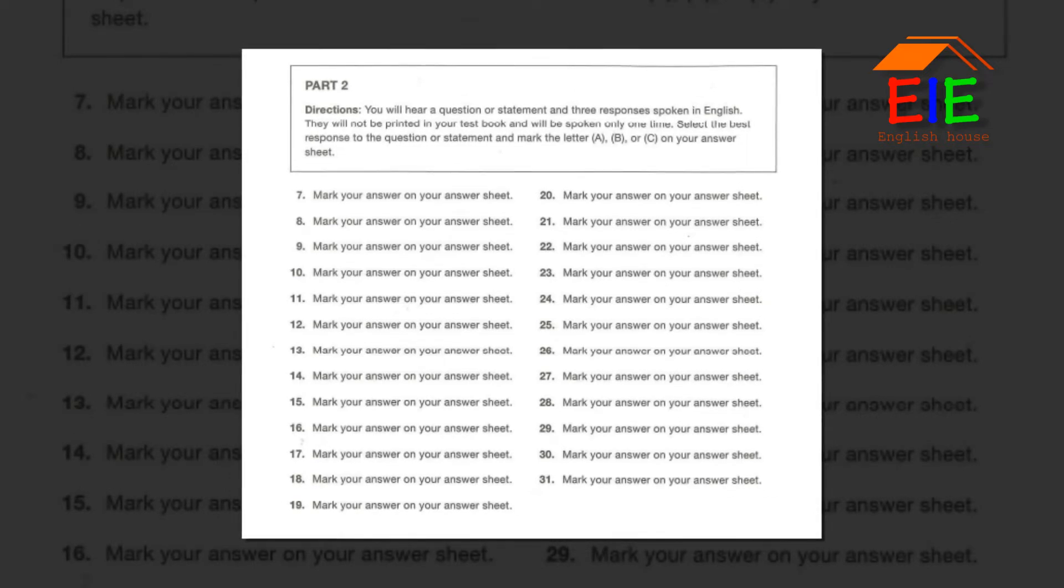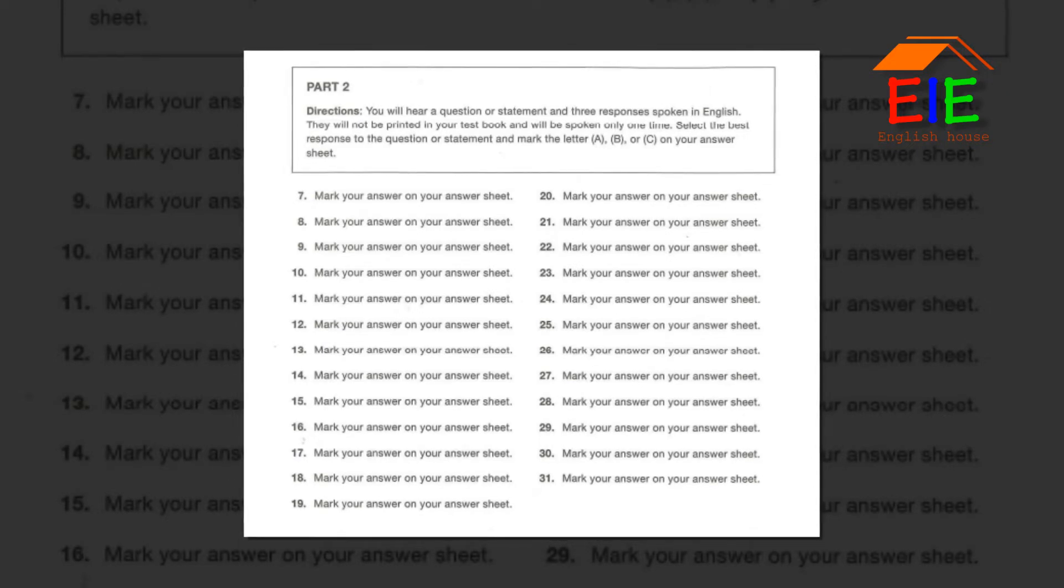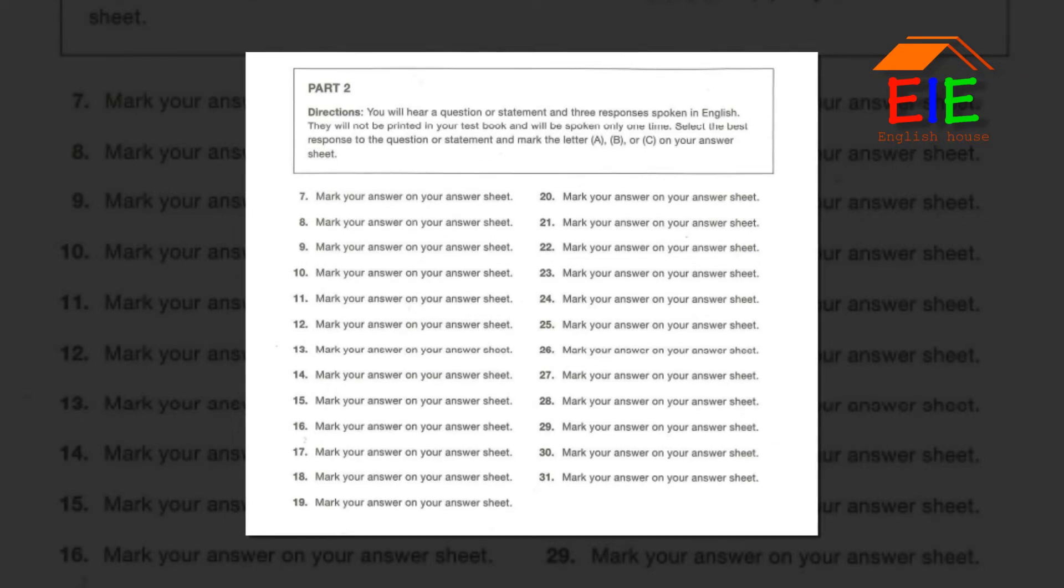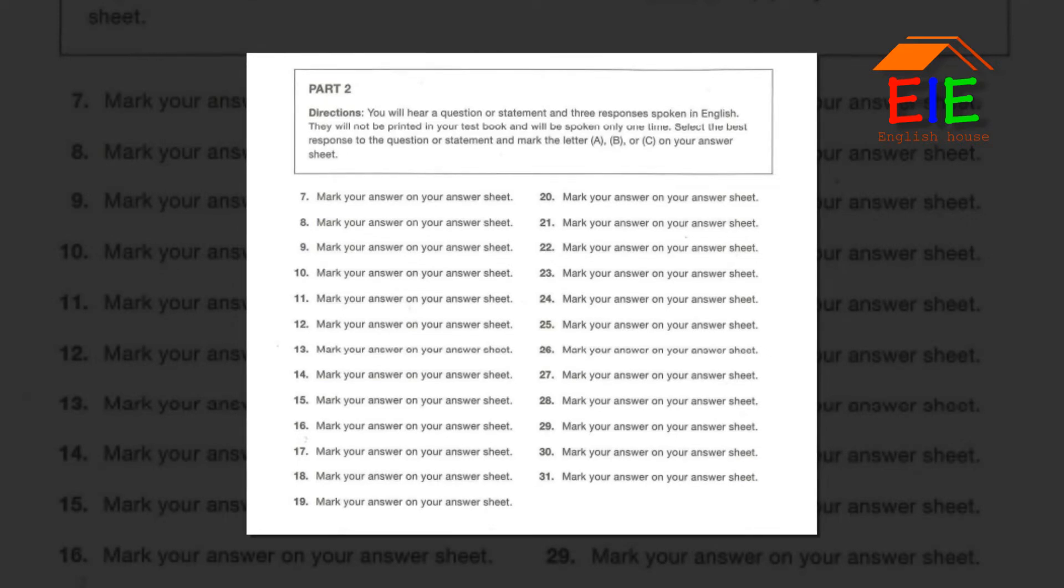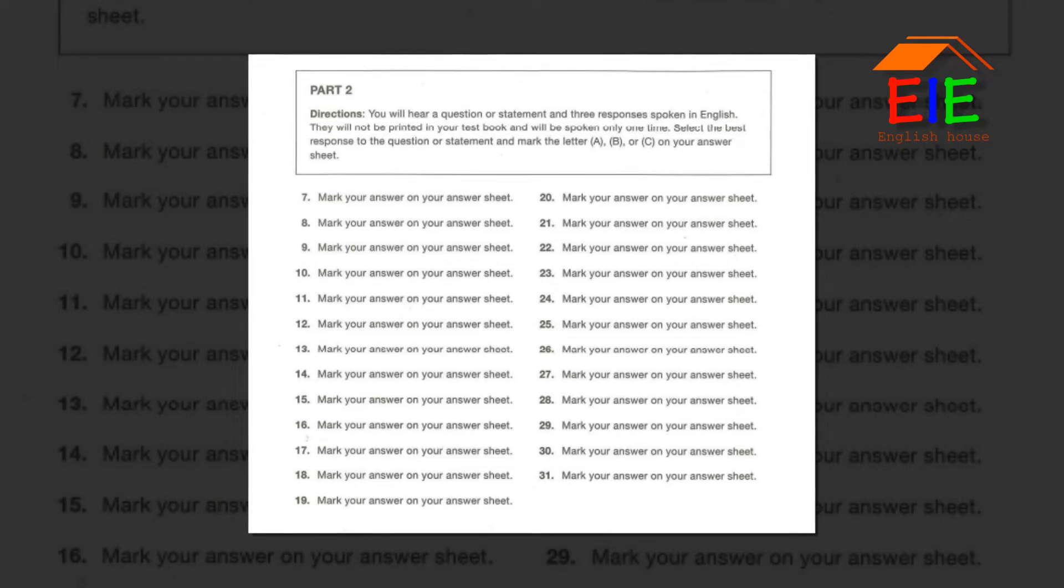Number 16. How can I request expedited shipping? A. The last shipment. B. Complete an order form online. C. Overnight to Singapore. Number 17. Don't we need to purchase more fabric samples? A. Yes, I'll do that now. B. Downstairs on the left. C. I've already read it.